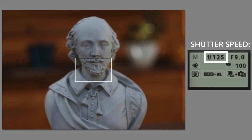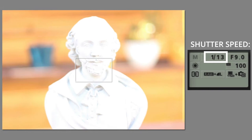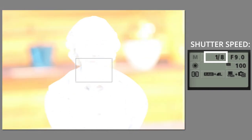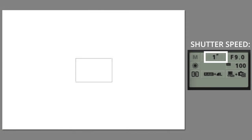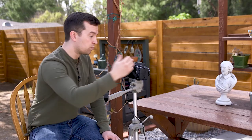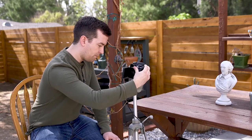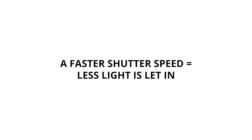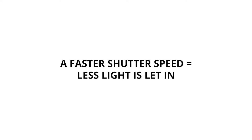Now if we go in the opposite direction — 1/13th, 1/10th, 1/8th — this can go even longer to something like half a second or a full second. But when we do that, it gets really overexposed. So the takeaway is that a faster shutter speed lets in less light and a slower shutter speed lets in more light.